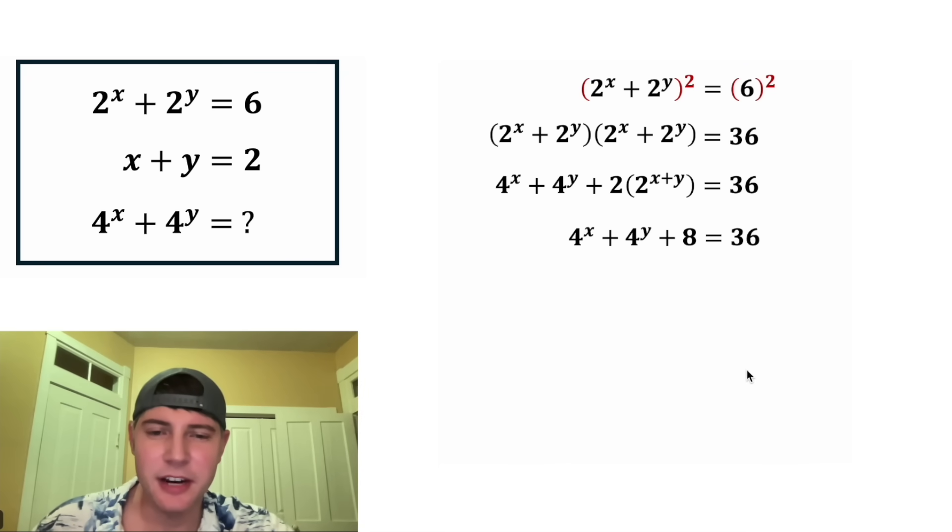Let's smush everything together and subtract 8 from both sides. These will cancel each other out. So the left-hand side is 4 to the x plus 4 to the y, and 36 minus 8 is equal to 28.